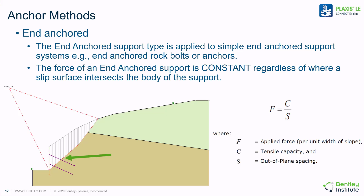One of the simplest types of anchors in the software is an end-anchored support. In this support method, the force is applied along the anchor at a constant level regardless of where the slip surface intersects the body of the support. It should be noted that if the slip surface does not cut through the anchor, then the anchor is effectively not considered in the analysis. The force is calculated as the tensile capacity divided by the out-of-plane spacing. The out-of-plane spacing measurement is an attempt to approximate 3D conditions in a 2D model, and effectively anchors are point loads — in 2D models they are plate members reduced by the spacing value entered in the field.